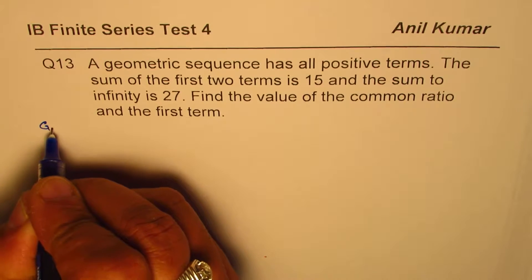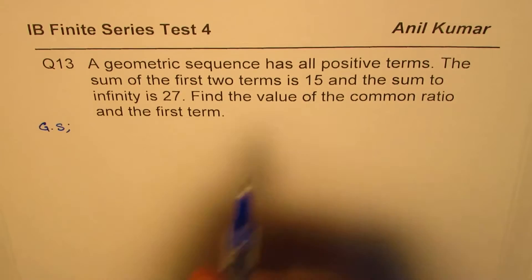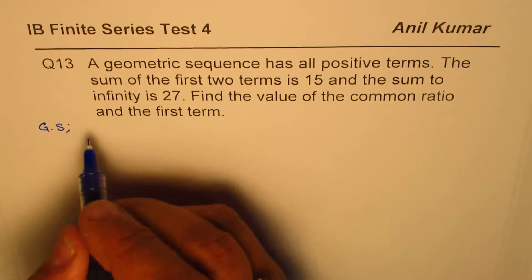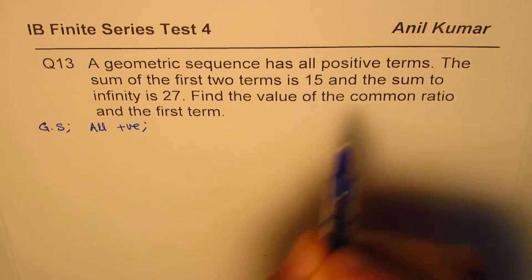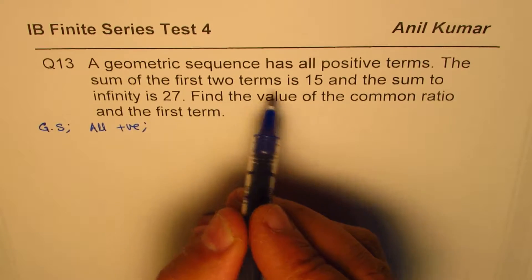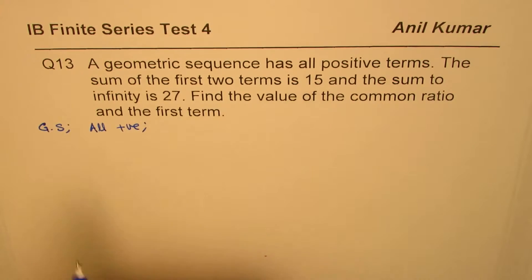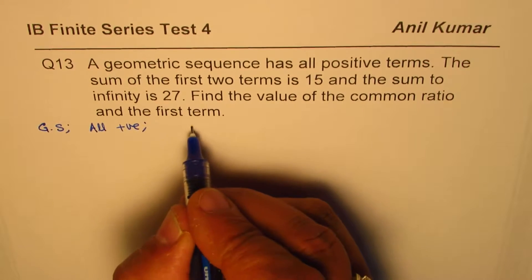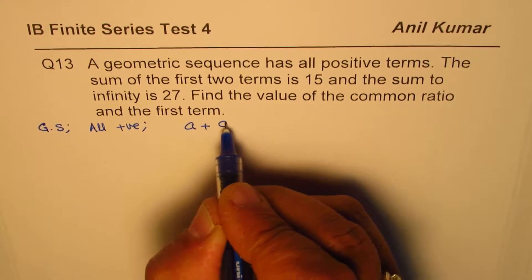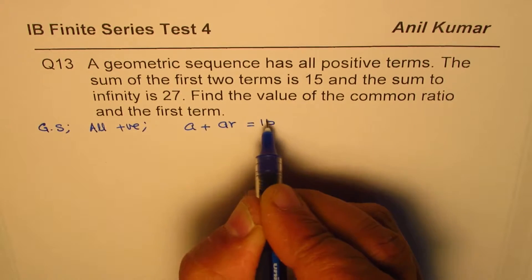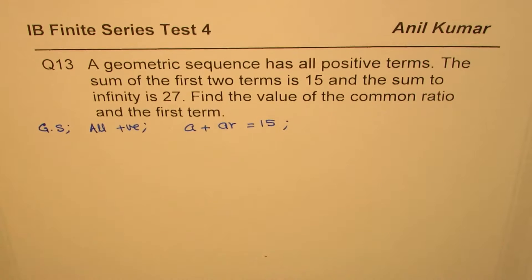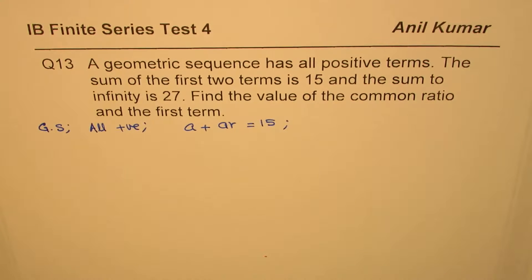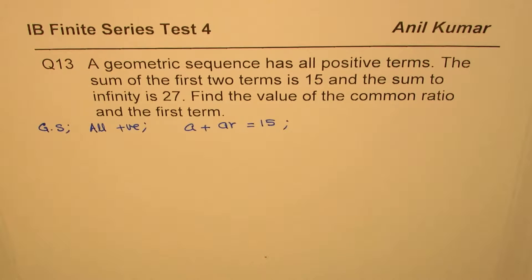So we are talking about a geometric series. All positive terms. The sum of the first two terms is 15, that is to say a plus ar equals 15. And the sum to infinity is 27. Now what is the formula for sum to infinity? You might need that one.